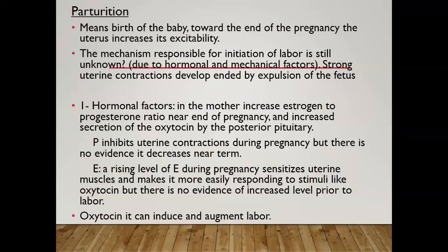Regarding delivery or parturition, it is the birth of the baby. Toward the end of pregnancy, the uterus starts to develop excitability to deliver the baby. The mechanism responsible for initiation of labor is still unknown — some say it is hormonal, others say mechanical. Strong uterine contractions develop, ending in expulsion of the fetus. Theories include an increase in the estrogen-to-progesterone ratio near the end of pregnancy, and increased secretion of oxytocin by the posterior pituitary gland.